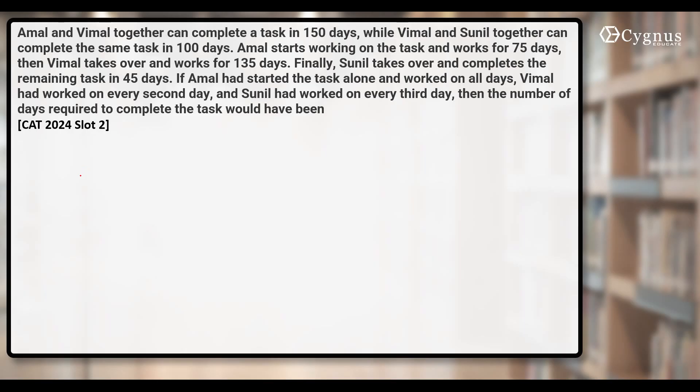It's a very lengthy question. Let's see. Let's say Amal can do A units per day, Vimal can do V units per day, so they'll have to work for 150 days. That means the total work should be (A+V)×150. Second group is Vimal and Sunil. Their one day's work would be V+S, they'll work for 100 days. So now the total work will become (V+S)×100.